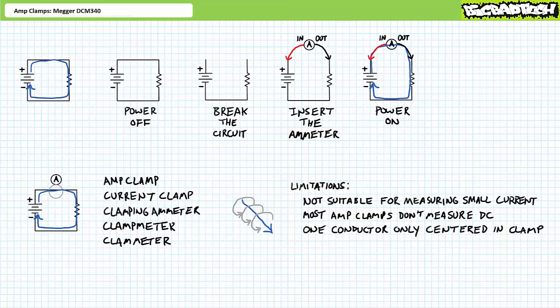Next, amp clamps don't measure DC current very well, because the circuitry inside most amp clamps is actually more sensitive to changing magnetic fields associated with AC current, rather than fixed ones associated with DC current.